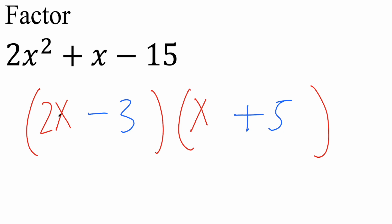And to know if this works, we take our 2x, we multiply by 5 and we get 10x. Take our x times negative 3, we get negative 3x. 10x minus 3x is 7x, not x. So this is not correct.